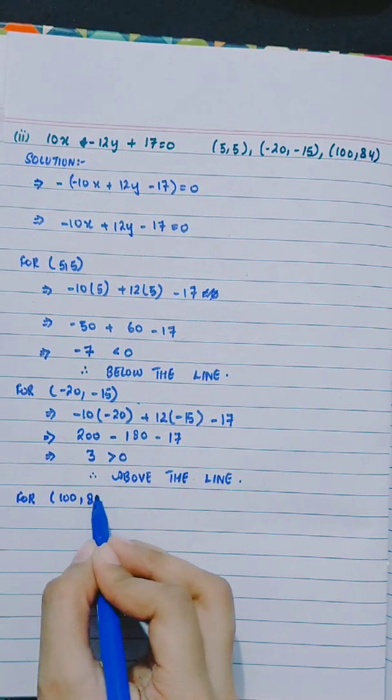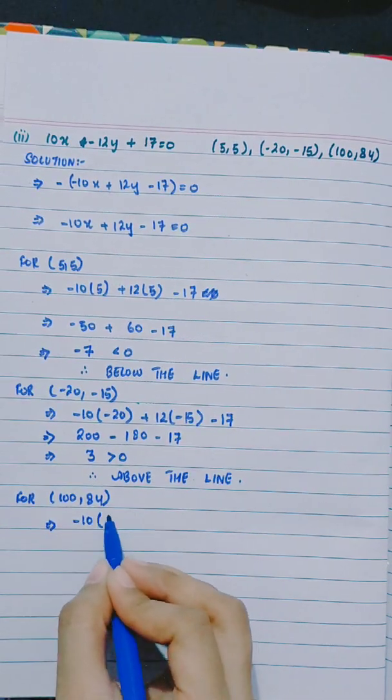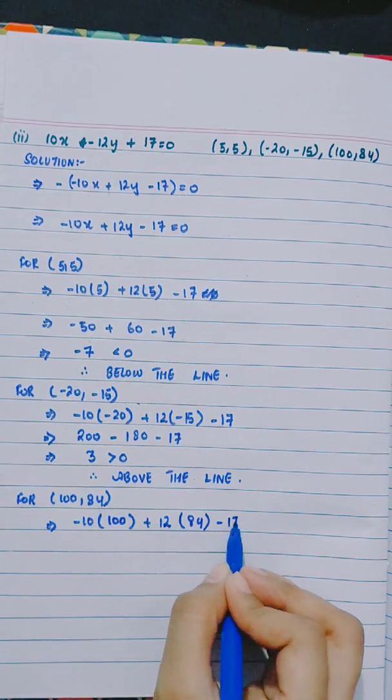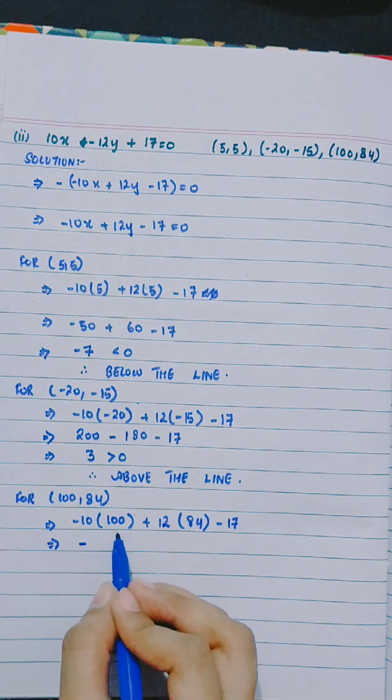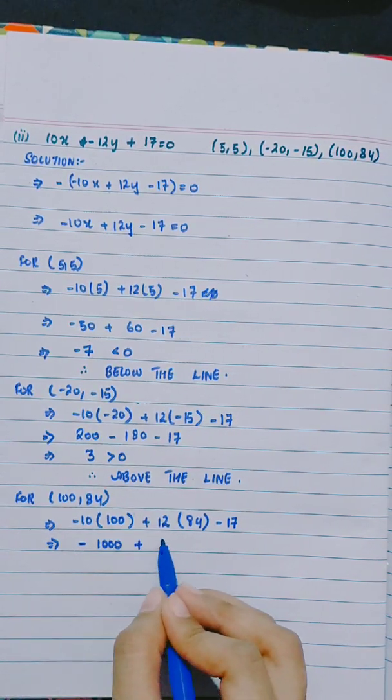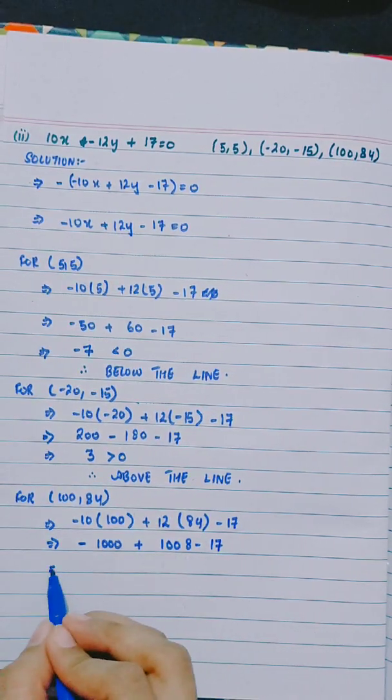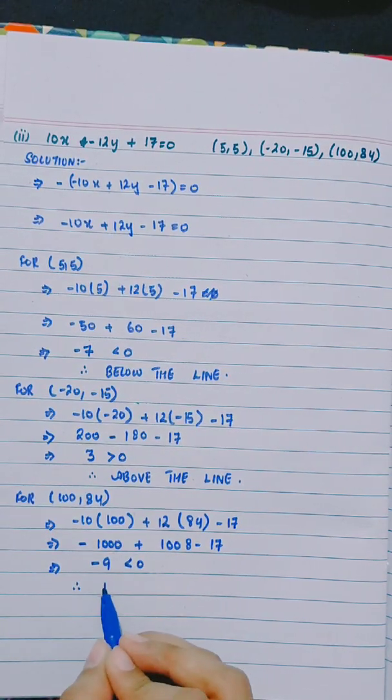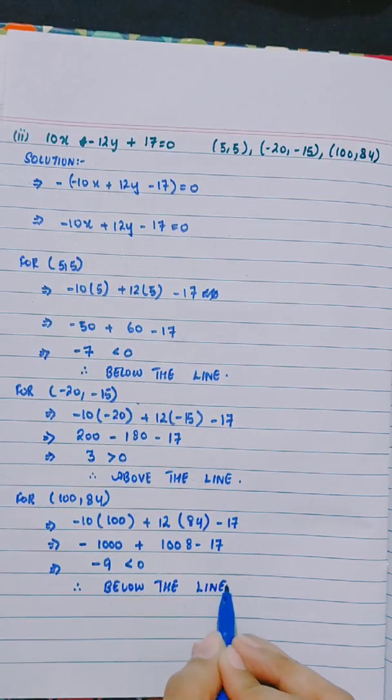For (100,84), -10 into 100 plus 12 into 84 minus 17. -1000 plus 1008 minus 17. Minus 9 less than 0, therefore below the line.